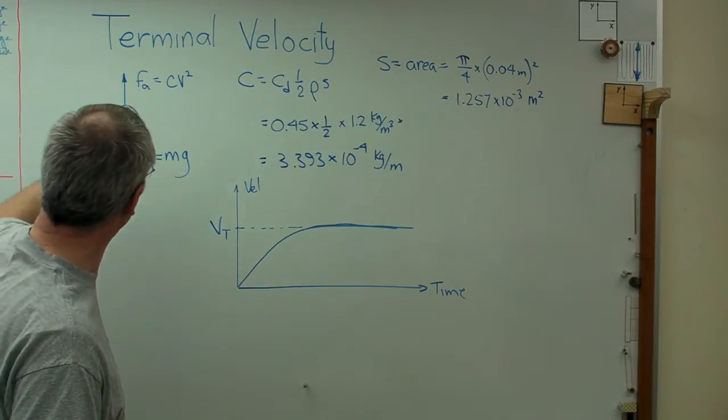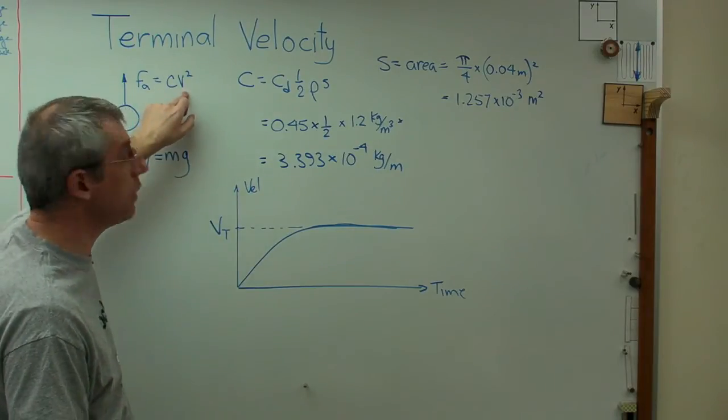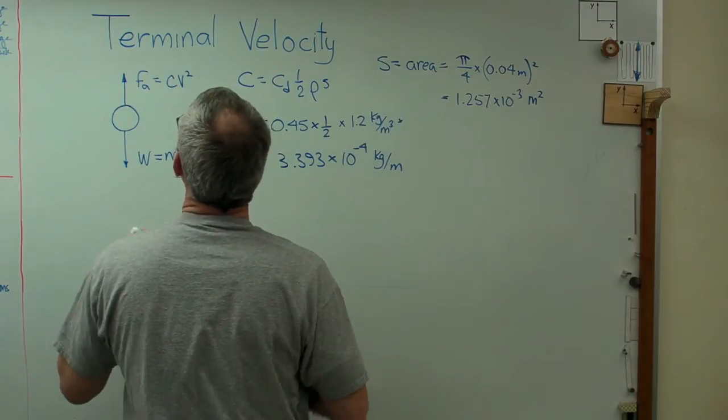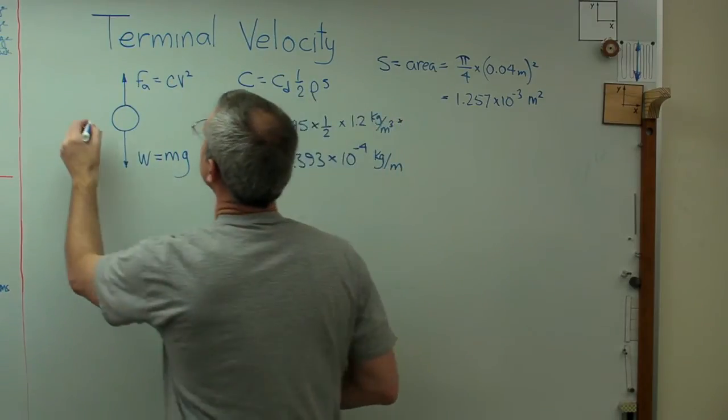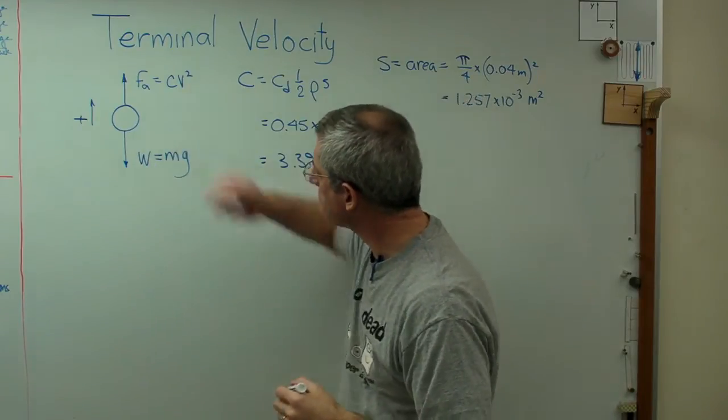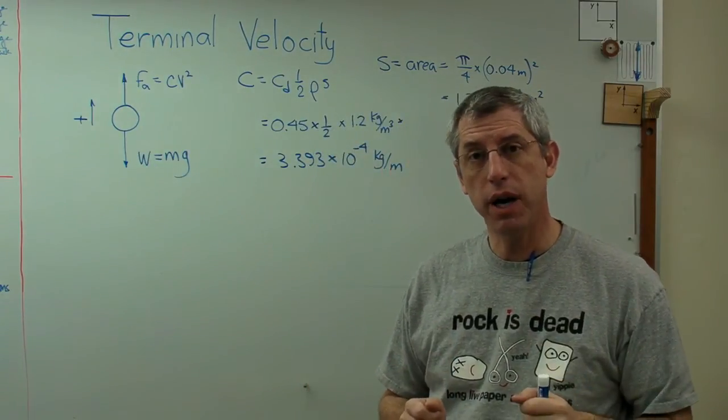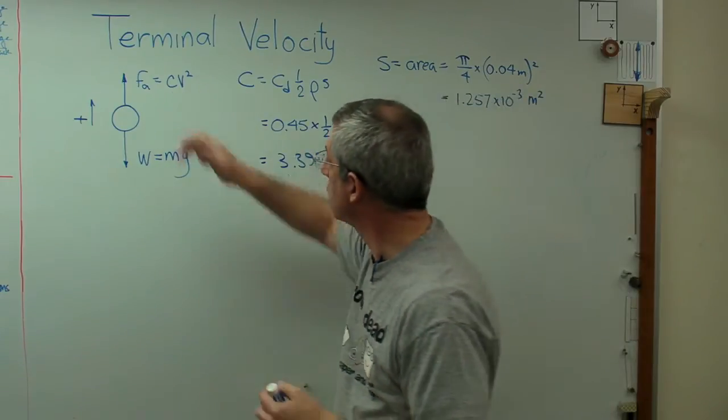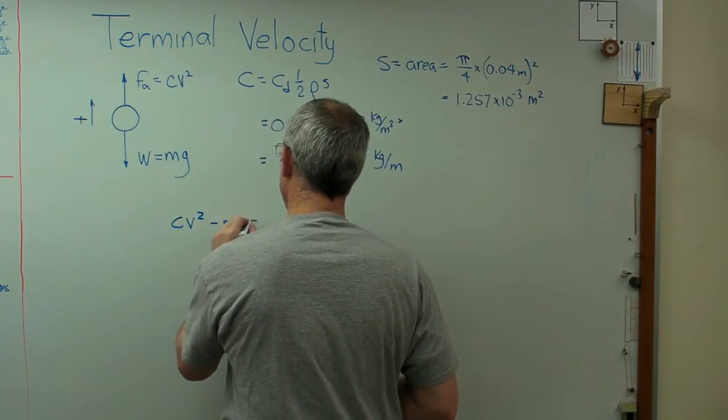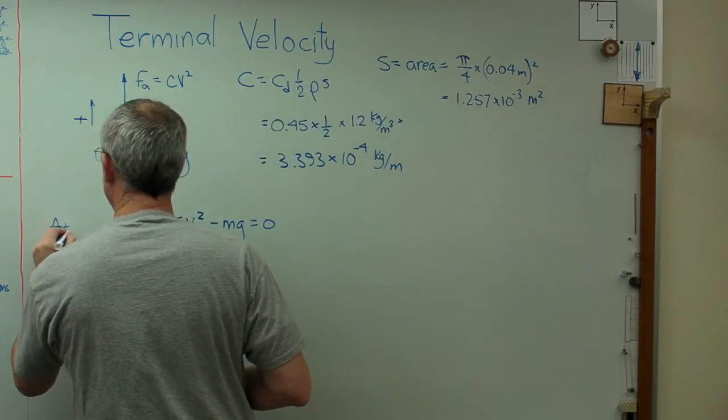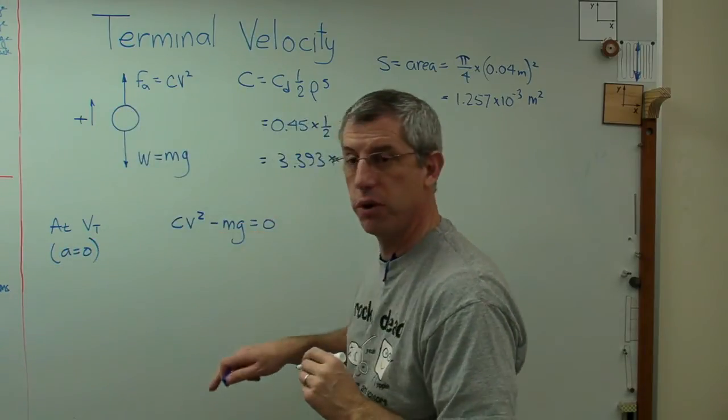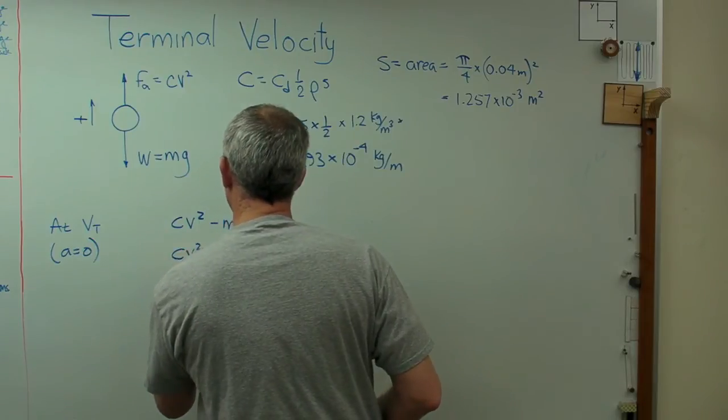So if I'm going to figure out what terminal velocity is here, I'm really going to try to figure out a value for v. So here's how we're going to do this. It doesn't really matter whether I call positive up or positive down. Let's call positive up. When I'm at terminal velocity, there's no acceleration, right? So these two forces have to equal one another. So I'm going to say cv squared minus mg equals zero. So at vt, remember acceleration equals zero now. It means cv squared equals mg.